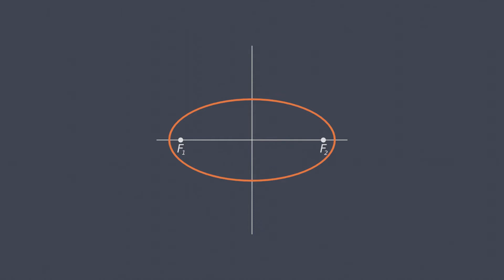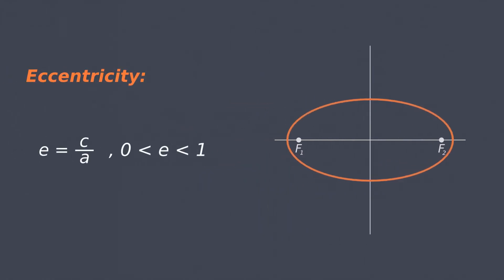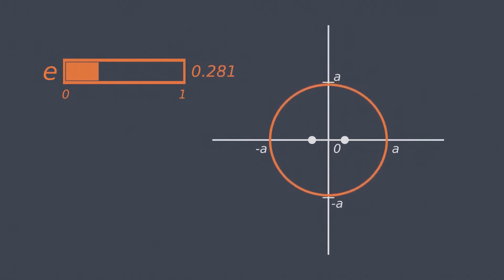Another important quantity is the eccentricity e, which is the ratio of the focal length to the length of the semi-major axis. Its value is something between 0 and 1.